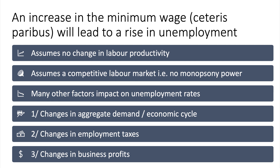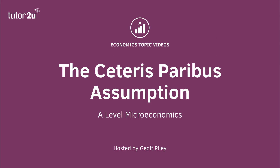Aggregate demand itself could be affected by a higher minimum wage. Other factors include changes in the level of employment taxes such as national insurance contributions, and changes in business profits — which affect the extent to which a firm can pay a higher minimum wage without necessarily raising prices. Challenging the Ceteris Paribus assumption that a minimum wage increase leads to a rise in unemployment can be a key part of your evaluation skills. It's well worth knowing about the Ceteris Paribus assumption.